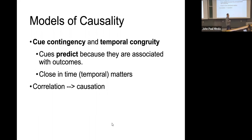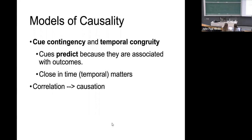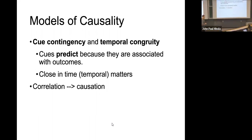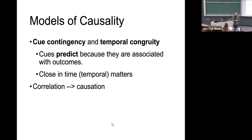Cues are things you observe that predict outcomes because they are associated with them — there's a Q contingency. When one thing happens, another thing happens, possibly because it's caused. The other key factor is that they're close in time. Things that seem to have a Q contingency relationship and a temporal relationship are likely to be causal relations. It's easy to see causal relationships in things that happen right after each other. It's harder to see them in things that take a longer amount of time.